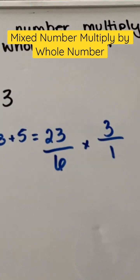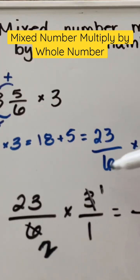The reason why we put 1 is because any number over 1 equals the numerator as a whole number. 3 times 1 is 3.